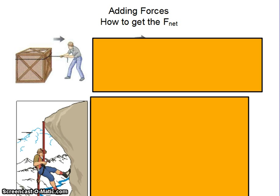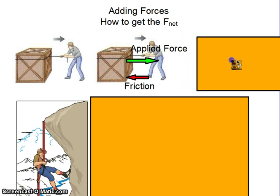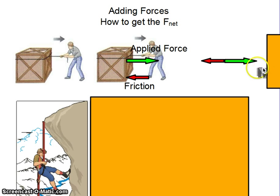Getting a little bit into how do we add forces to get the F net. Imagine I'm trying to pull a crate. On that crate, you might think there might be two forces. There's the applied force of the man pulling on the crate, and then there's a frictional force that acts in the opposite direction of motion on the crate. So if I want to add these two together, I line them up.